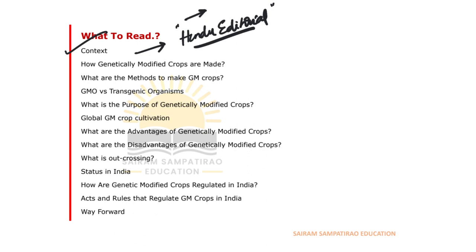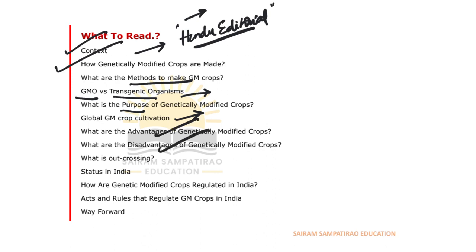We will cover how genetically modified crops are made, the methods to make GM crops, the relation between GMO and transgenic organisms, the purpose of GM crops, their global cultivation, advantages and disadvantages, outcrossing, the status of GM crops in India, regulatory bodies, acts and rules, and finally the way forward.